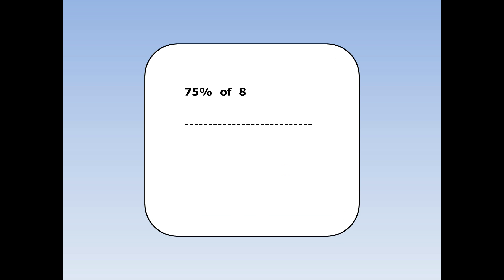Find 75% of eight. 75% is the same as three quarters. To find three quarters, I divide by four and then times by three. 8 divided by four is two. 2 times three is six. 6.